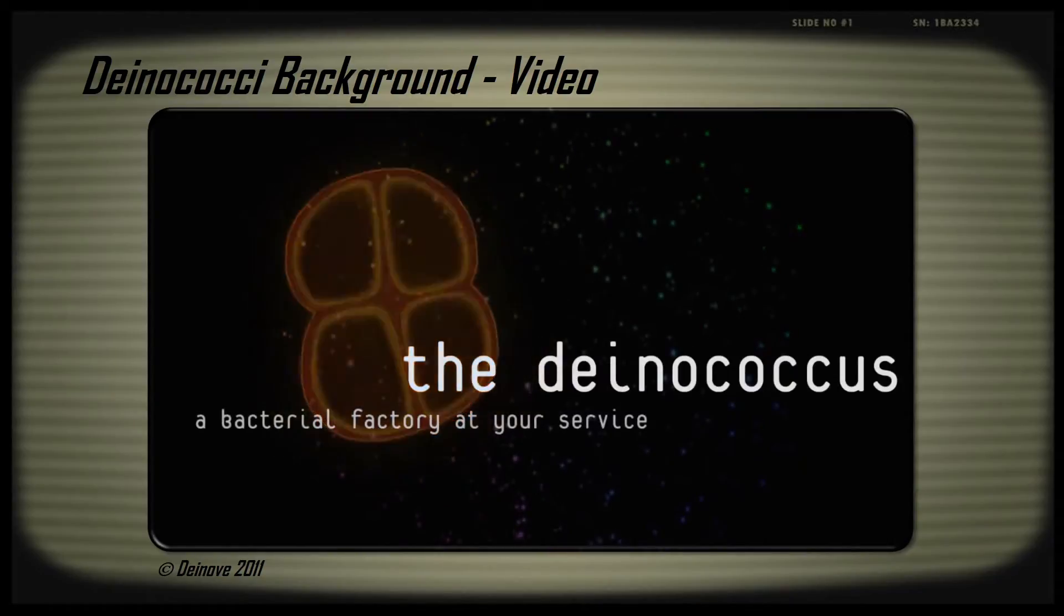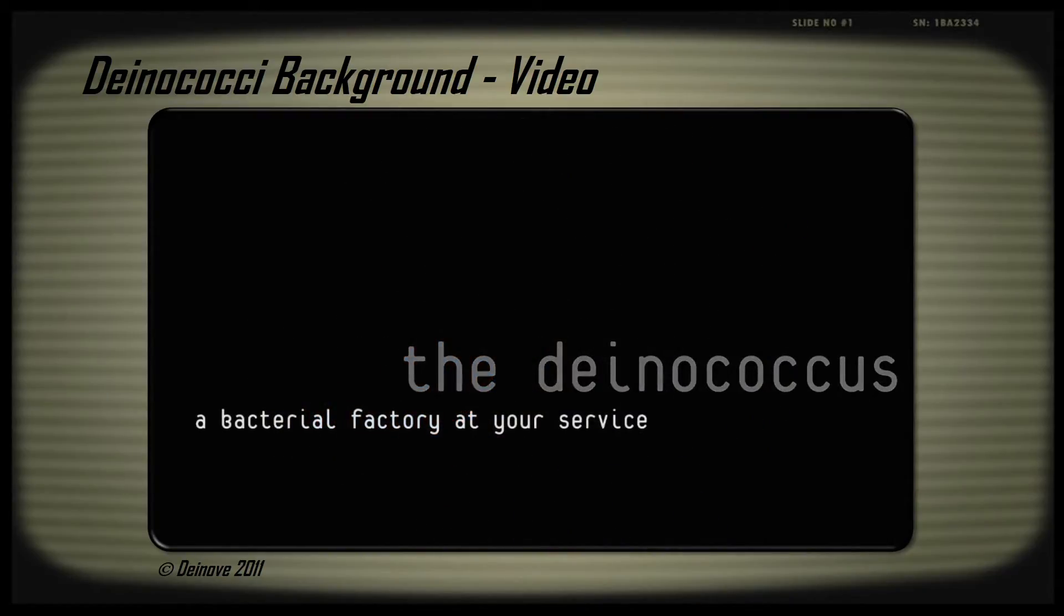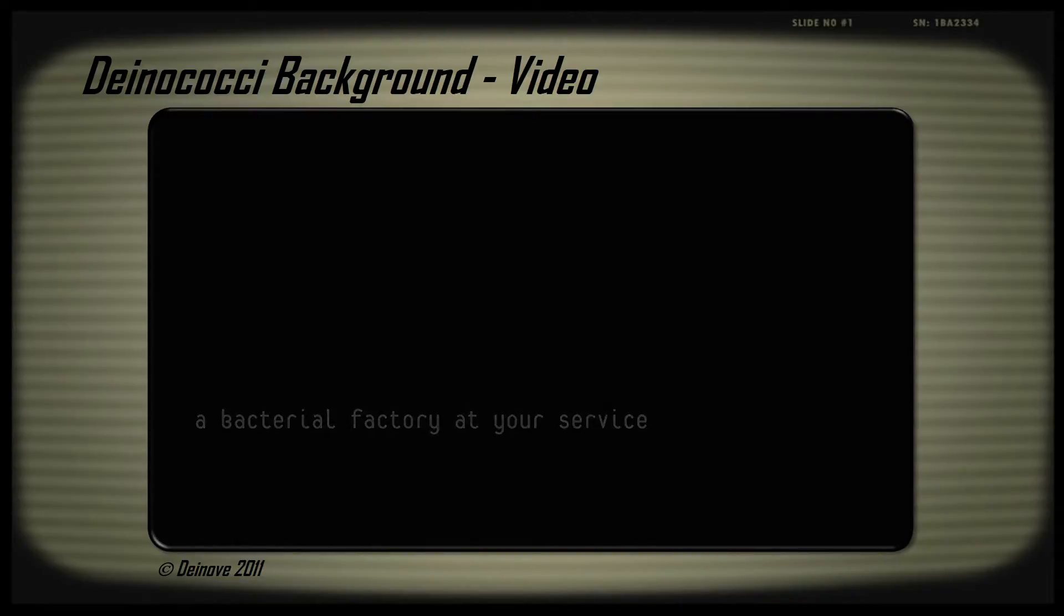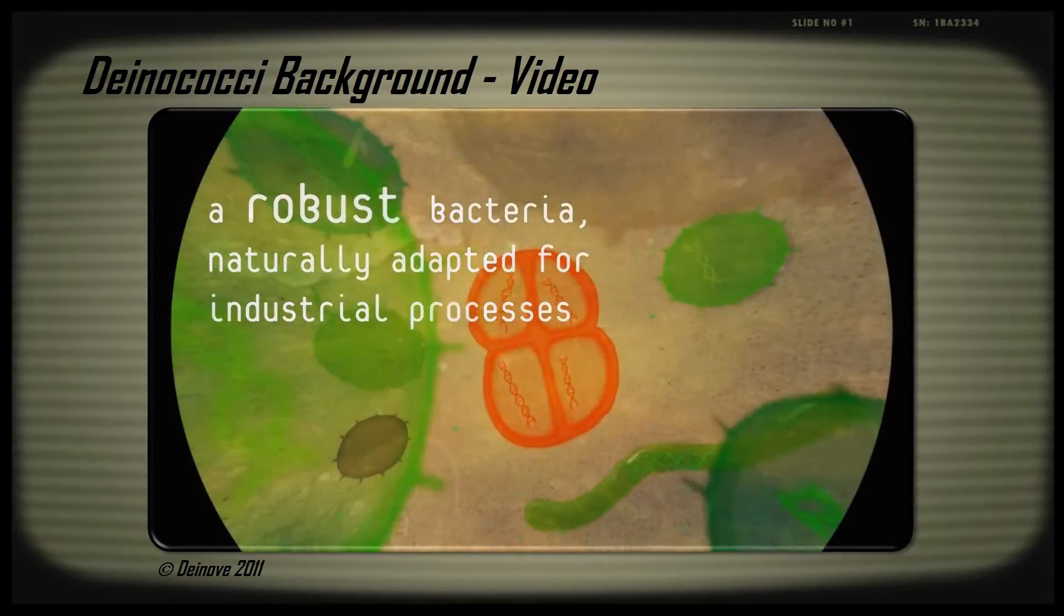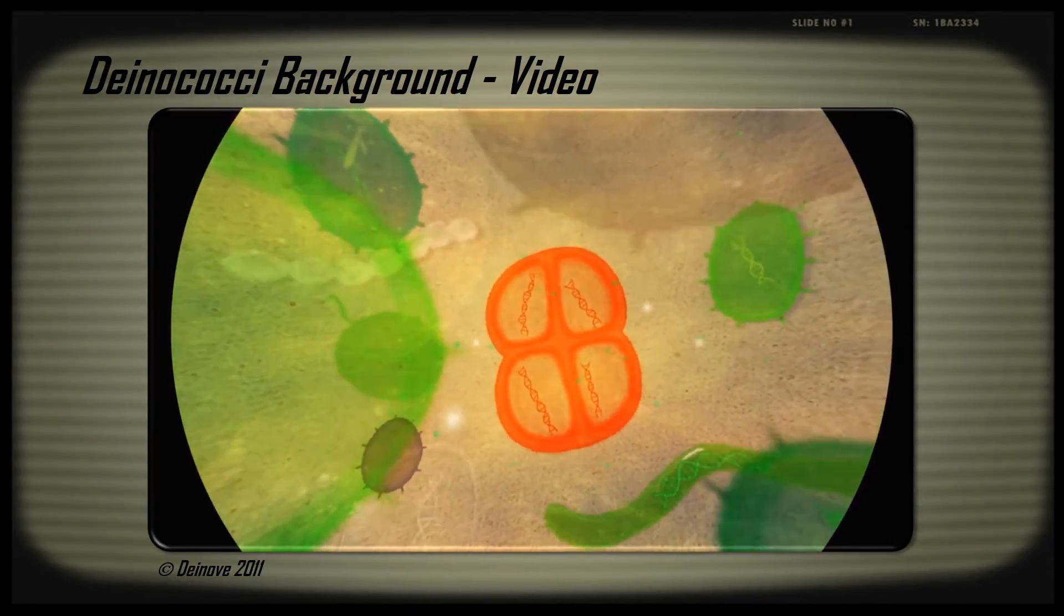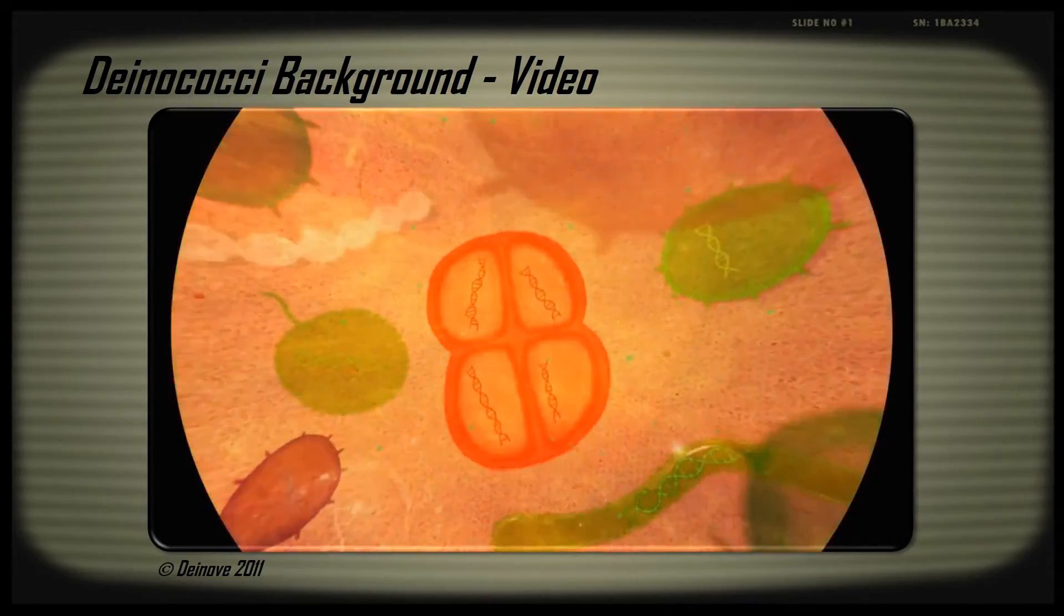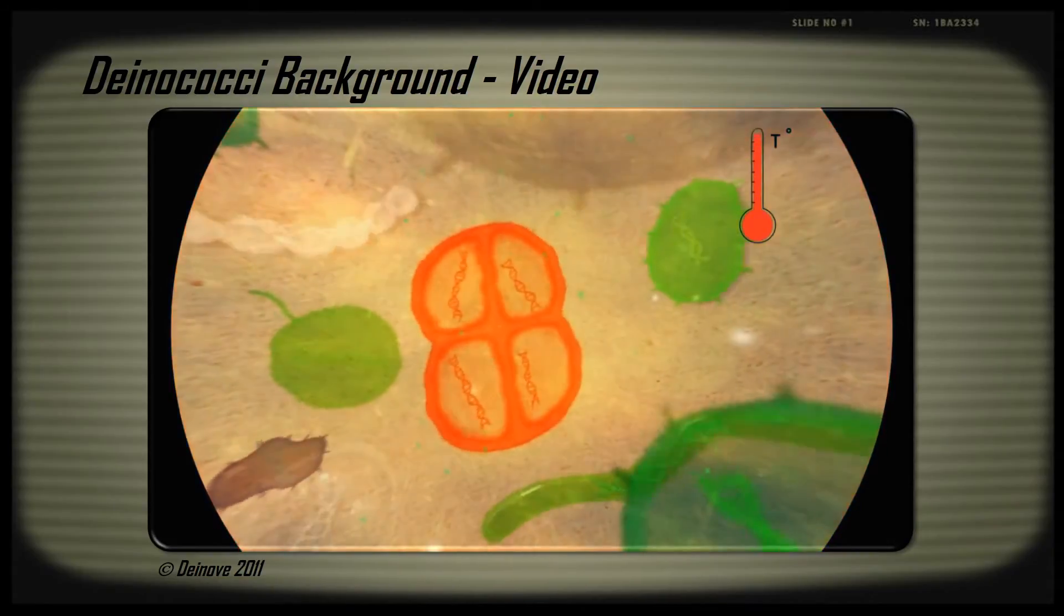Over time, the Deinococcus gradually adapted itself to its environment and developed extraordinary abilities. Exposure to harsh conditions, such as extreme temperatures and gamma rays, damages the DNA of most living organisms, eventually killing their cells.